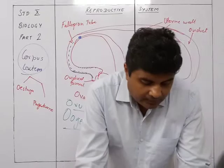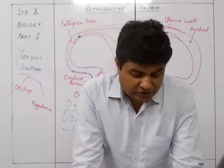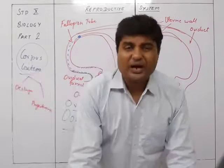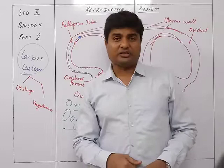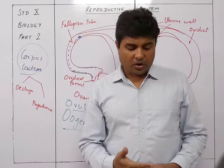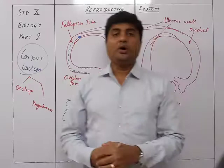The vagina is a muscular tube 10 to 15 cm long, starting from the lower end of the uterus — the cervix — to the outside of the body. This entire muscular tubular structure is called the vagina. The vagina receives the male penis during copulation.